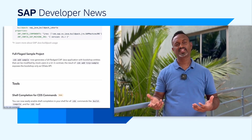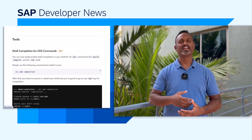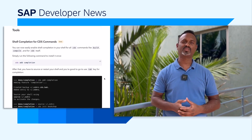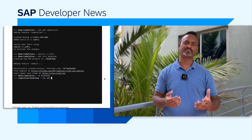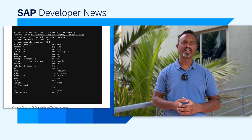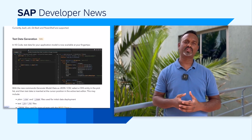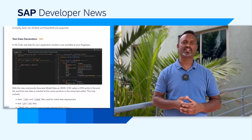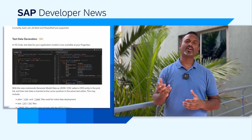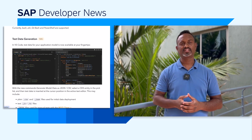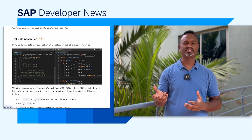The CDS add sample command now generates a full-fledged CAP Java application with Bookshop entities. New updates in the tools include shell completion for CDS commands using the Tab key. In VS Code, test data for your application model is now available with new commands to generate model data as JSON or CSV.